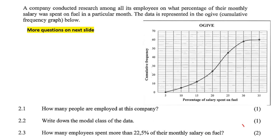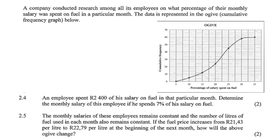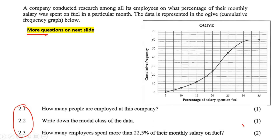With this question, there will be more coming up on the next slide. So you see there's 2.1, 2.2, 2.3, 2.4, and 2.5. It says that a company conducted research among all its employees on what percentage of their monthly salary is spent on fuel.